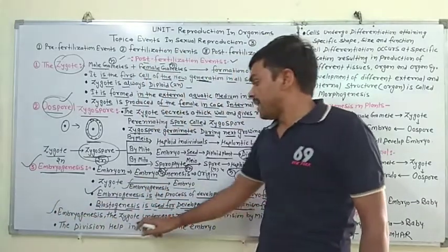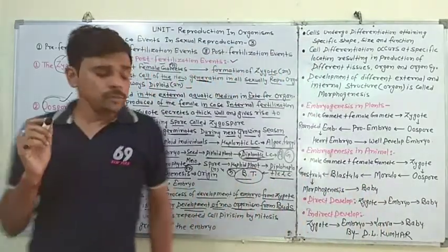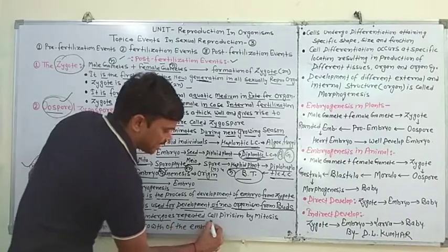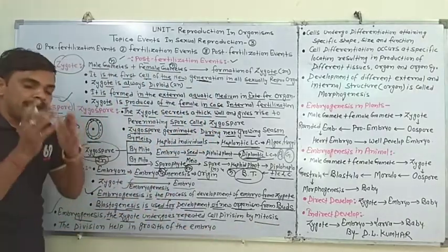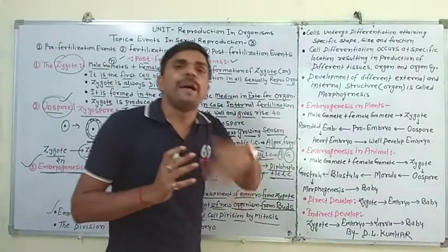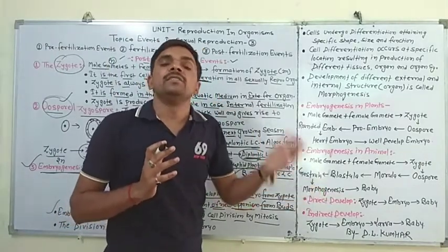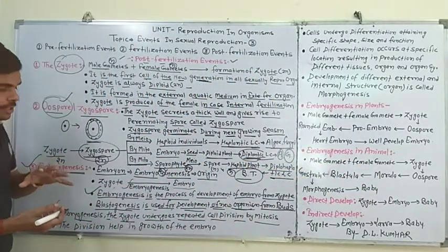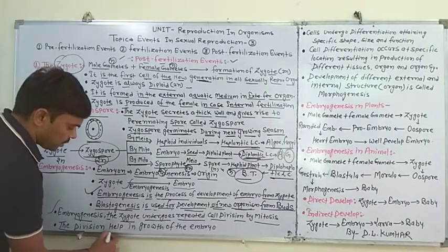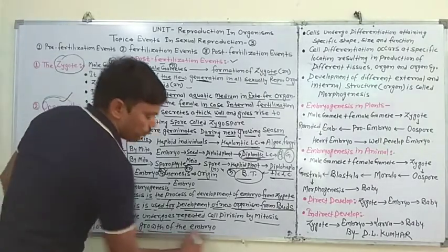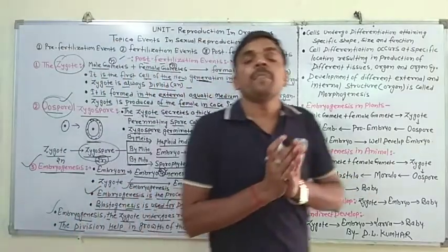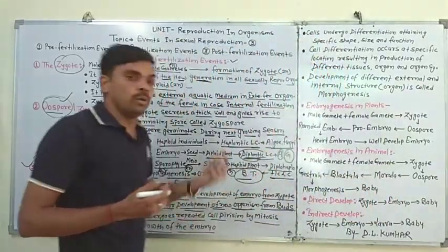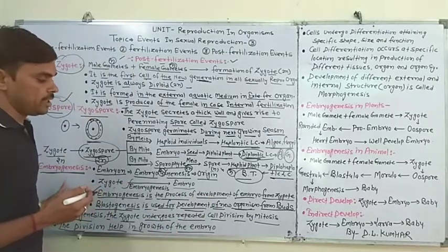Embryogenesis में the zygote undergoes repeated cell division by mitosis। Repeated cell division होता है जिससे embryo की development होती है। The division helps in growing the embryo — बार-बार cell division होने से embryo grow करता है।